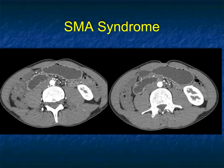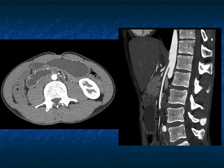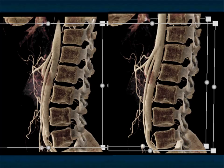Another example — again, the stomach is distended, but there is the duodenum. There's the transition point approaching the SMA, and there it is again — the narrowing, the SMA, the obstruction. A classic case of SMA obstruction. And here it is with cinematic rendering. Cinematic rendering is a nice view, doesn't change the diagnosis, but look at the narrowing of the SMA angle, beautifully shown in that example.